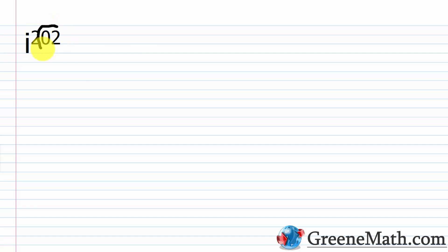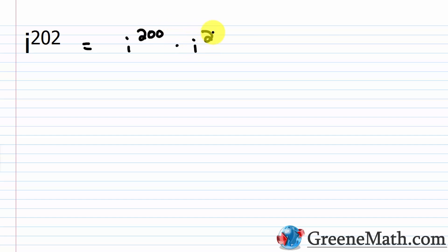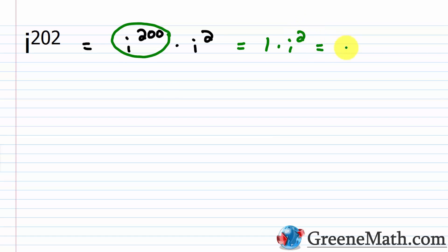What about i to the power of 202? Is it divisible by 4? No — the final two digits form 02, and 2 is not divisible by 4. Going down, 200 is divisible by 4. So I break this up as i to the power of 200 times i squared. We know i to the power of 200 is 1, so we have 1 times i squared. And i squared by definition is negative 1.